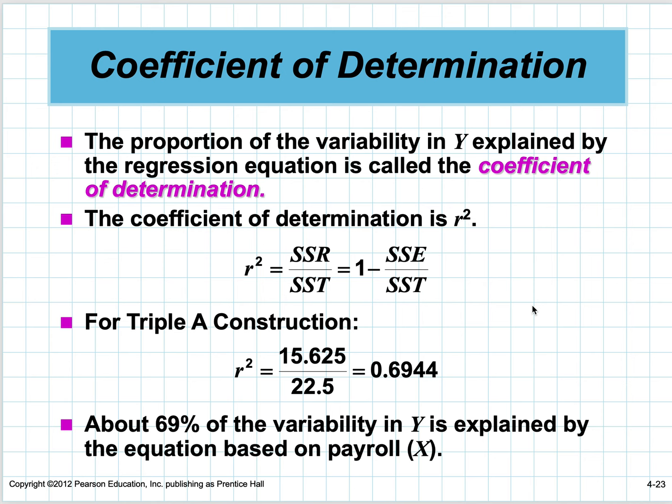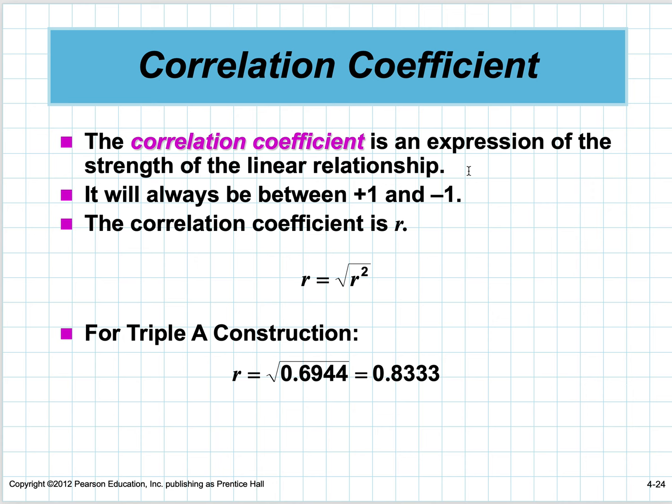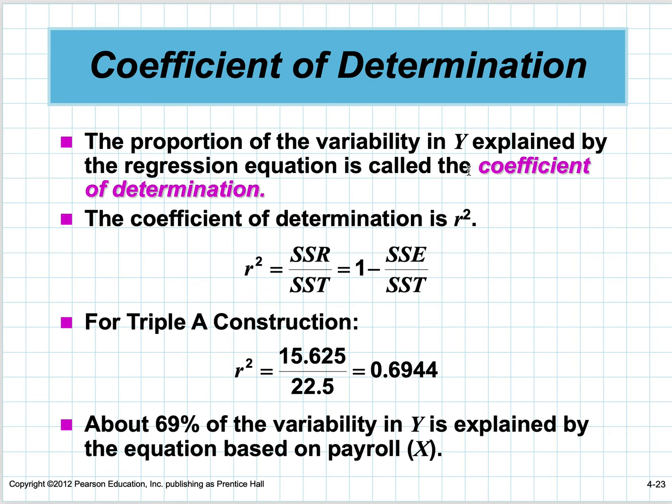It's called the coefficient of determination—a weird name. Most people just refer to it as R-squared. Some math terms like numerator, denominator, and coefficient of determination probably used to make more sense when they were first coined than they do to people learning it now.